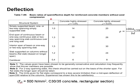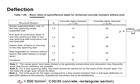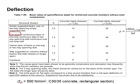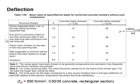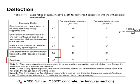In the table, k varies according to different conditions. The first condition is a simply supported beam. The second condition is the end span of a continuous beam. The third condition is the interior span of a continuous beam. The fourth condition is for the flat slab, and the last one is for the cantilever.